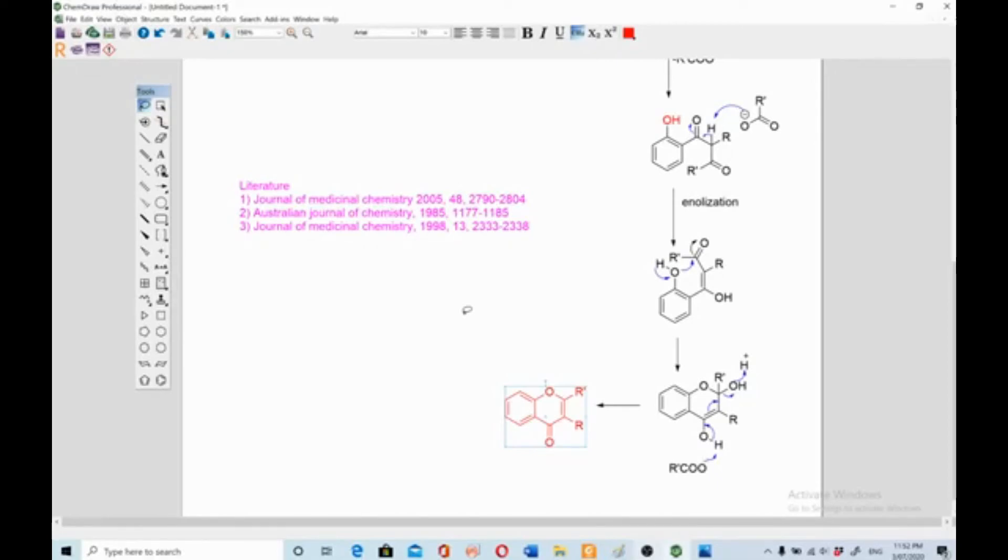Like Journal of Medicinal Chemistry, Australian Journal of Chemistry, again Journal of Medicine, this is some literature which shows that this reaction has been used to make a number of derivatives and compounds, and those derivatives or compounds have been published in these journals. If you have any questions or any suggestions, put your comments below. See you with the next video, bye.